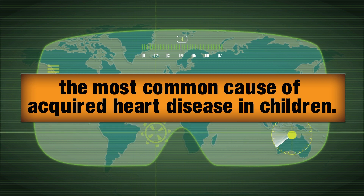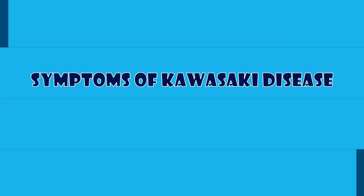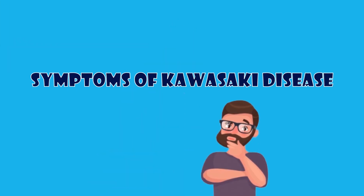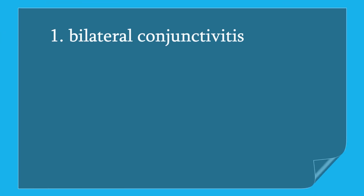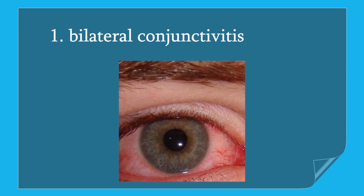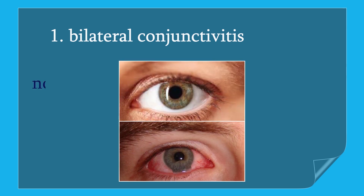Now let's look at the symptoms of Kawasaki disease. These terms can be a little bit strange to you, so let's try to get them one by one. The first one is bilateral conjunctivitis. Conjunctivitis is the inflammation of the conjunctiva of the eye, and bilateral conjunctivitis means the inflammation of the conjunctiva of both eyes.